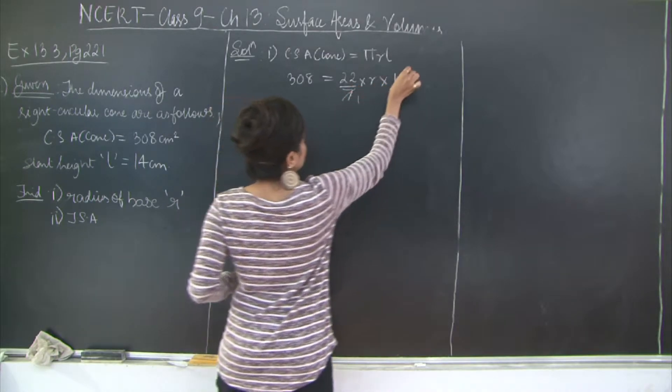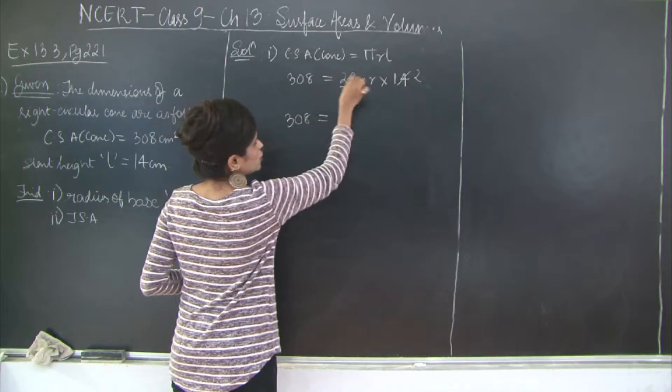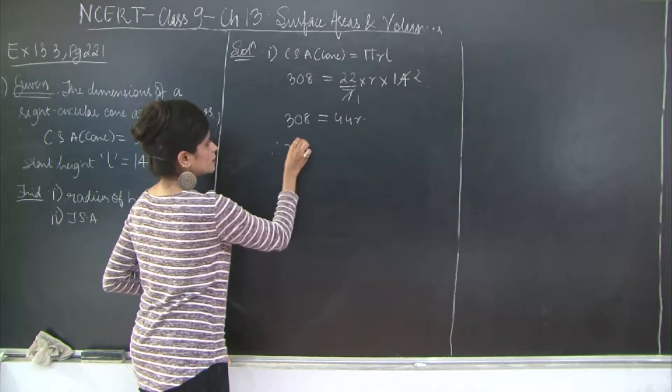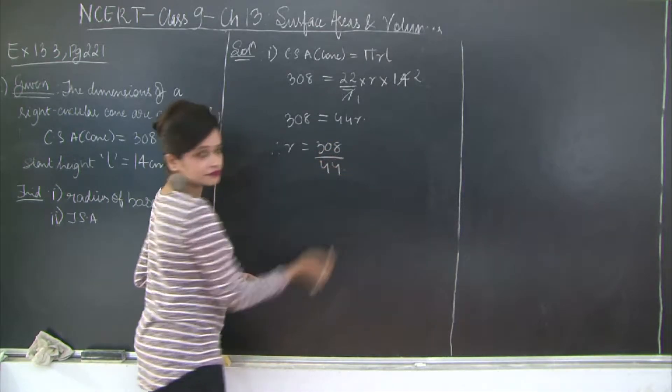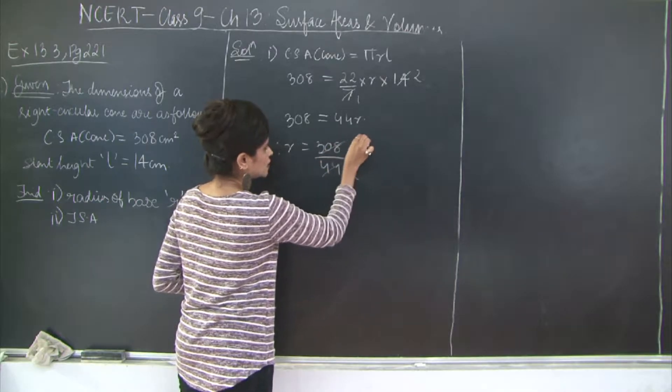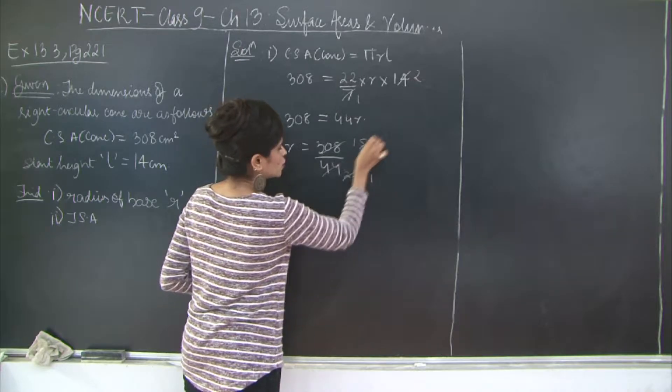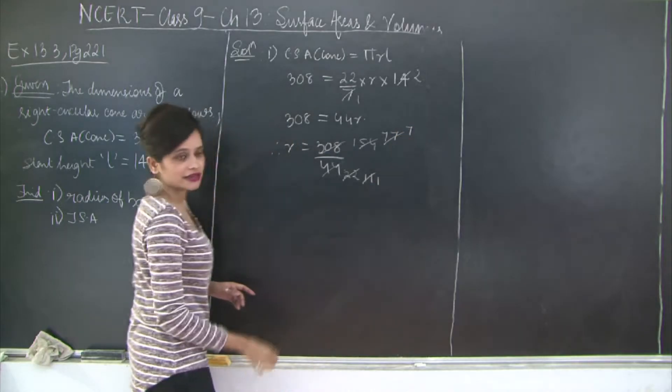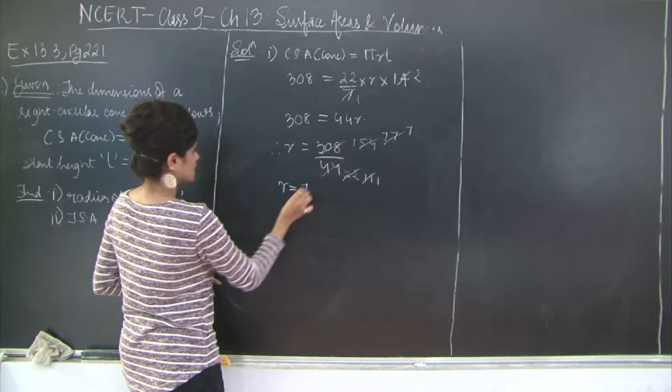So 7 ones are 7, 7 twos are 14. This is 308 is equal to 22 into 2 is 44 R. Therefore R will be 308 divided by 44. So let's cancel. 2 22's are 44, then again 2 11's are 22, 2 7's are 14, 11 1's are 11, 11 7's are 77. So radius is equal to 7 cm.